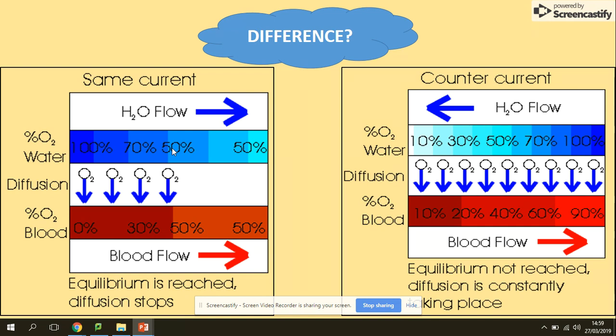Instead, fish have a counter-current flow, where water and blood flow in opposite directions. As you can see on this picture, every time the concentration gradient is maintained, so the diffusion of oxygen into the blood of the fish can take place along the whole length of the gill.